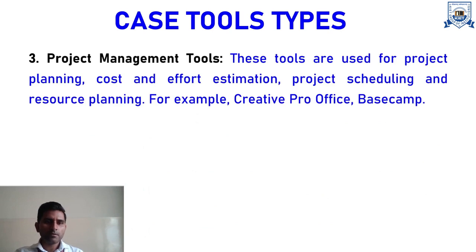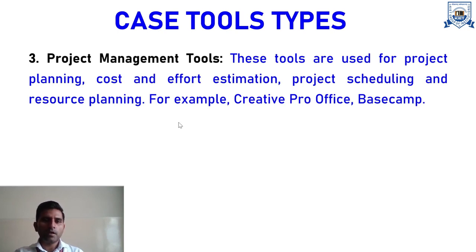The third type is project management tools. These tools are used for project planning, cost and effort estimation, project scheduling, and resource planning. If you are going for management of your project in terms of cost estimation, effort estimation, scheduling, and resource planning, you can utilize this category of tools. Popular tools in this category include Creative Pro Office and Basecamp.